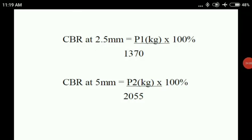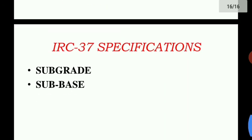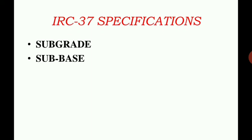These test results are used with curves to determine the thickness of the pavement and its component layers — this is the pavement design concept. As per IRC 37 (Indian Road Congress), the specifications for the subgrade state that the CBR value for the subgrade should range from 2% to 10%, and should preferably be greater than 2%.